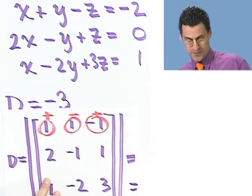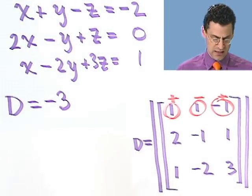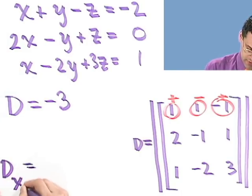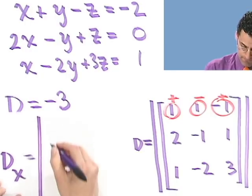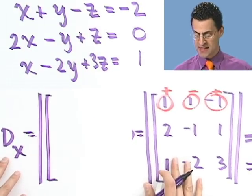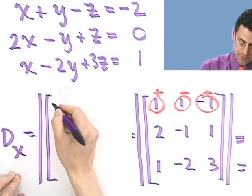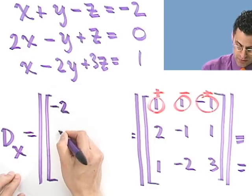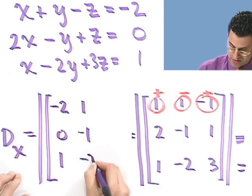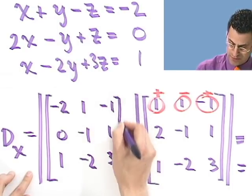Okay. So anyway, that takes care of D. Now I've got to compute these other guys. Let me compute now D sub x. Now remember what D sub x is. D sub x is exactly D, but I get rid of the x column and replace it by these. So I just put in a minus 2, 0, 1 in place of this and then copy everything else. So 1, minus 1, minus 2, minus 1, 1, 3. And now I have to compute this determinant. So this is sort of like determinant central here, folks.